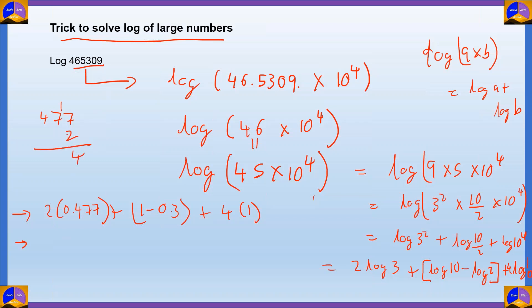And let's simplify this. 477 times 2, 14, 14 plus 1, 15, 8 plus 1, 9. So 0.954 plus 0.7 plus 4. So let's add them. 954 plus 700. So 1.654 and plus 4, you'll get the value of log 465309 as 5.654.